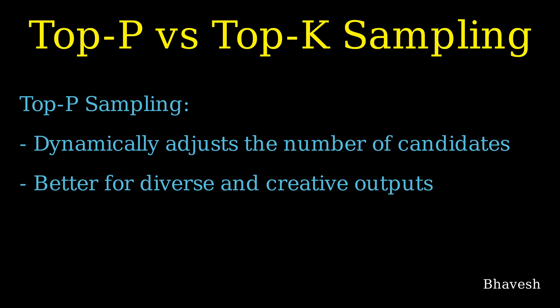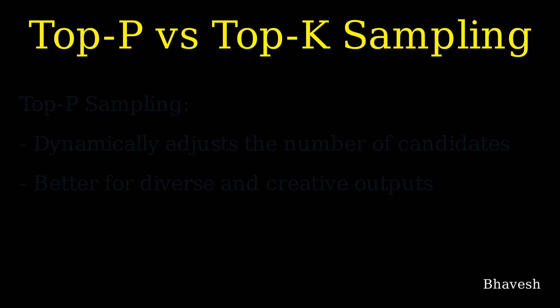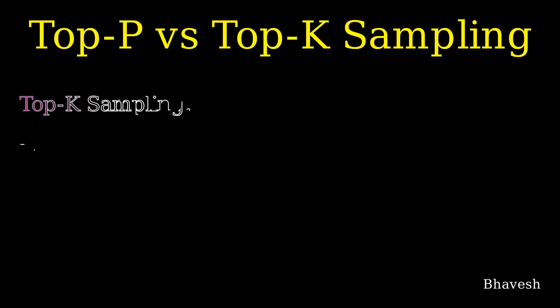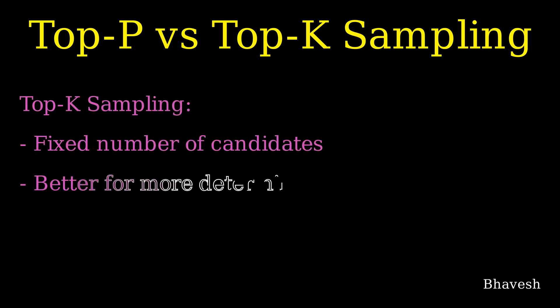However, if you want something safer with less creativity, the advantages of Top-K sampling come in. It has a fixed number of candidates based on the K value you select—you can select K equal to 3, 5, 7, etc. It's more suited for deterministic outputs. If you want to generate something similar to what you've generated previously, you can set the Top-K value and keep the Top-P value low and Top-K value high.